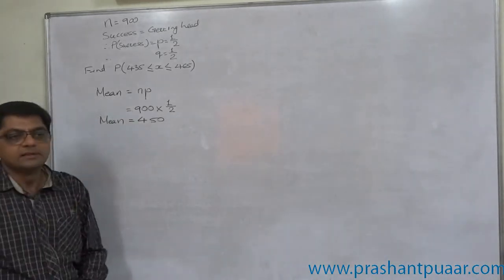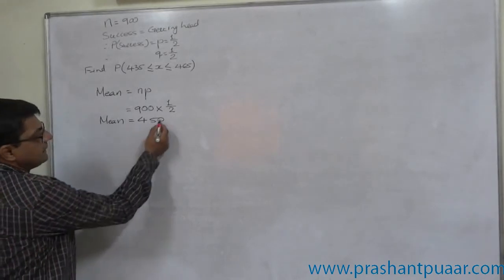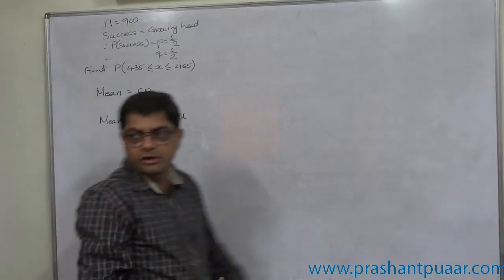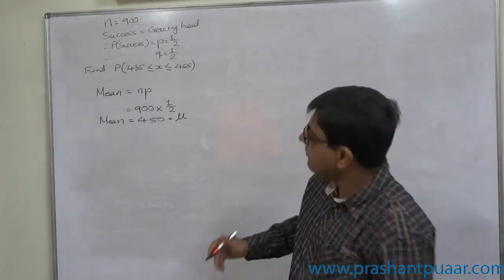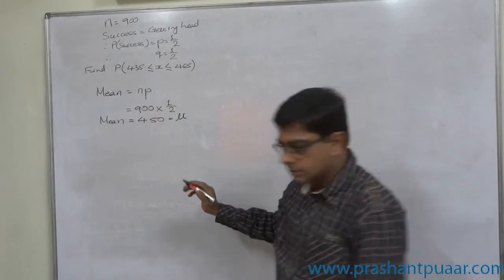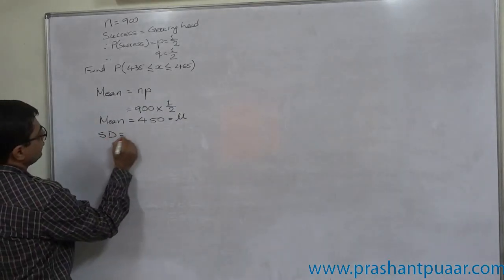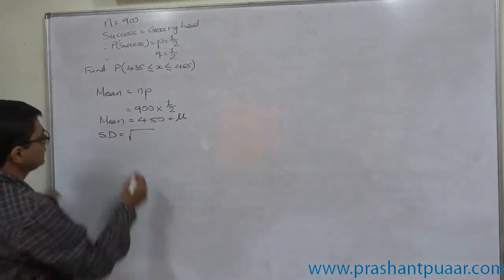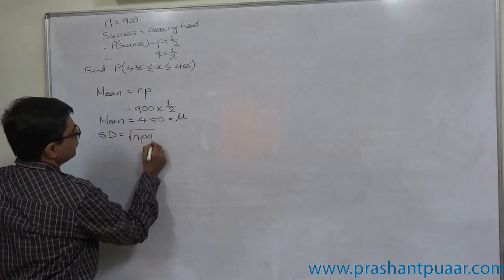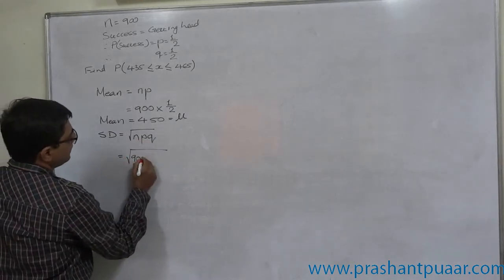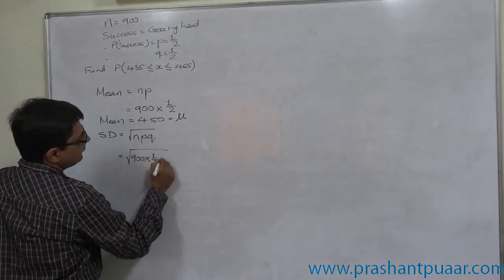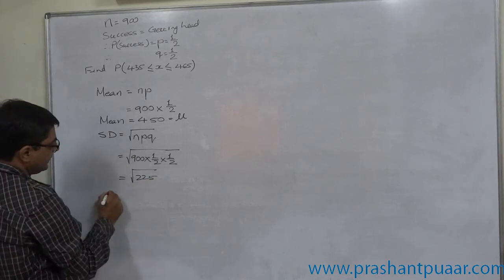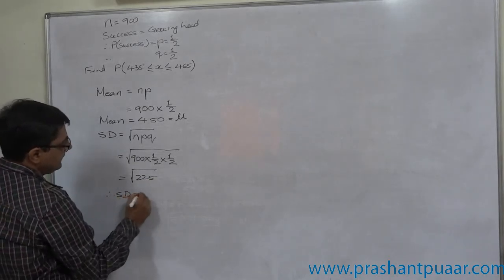So we have only one choice — normal distribution. We already have the mean of the distribution as 450. Now we need to calculate the standard deviation. For data which follows binomial distribution, standard deviation = √(npq) = √(900 × 1/2 × 1/2) = √225 = 15.